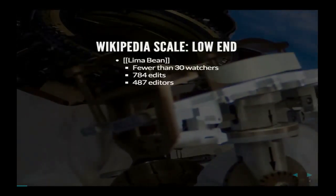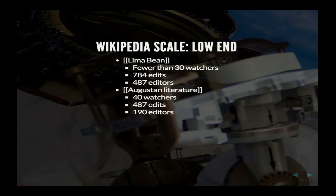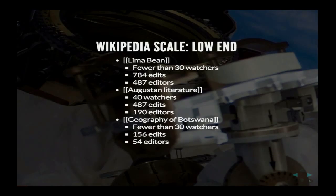On the other end of the scale on Wikipedia, you've got pages like Lima Bean. Wikipedia doesn't tell you if it has less than 30 watchers how many there are, so this might be one watcher — maybe 29 people that hate lima beans. Other pages like Augustine Literature or the Geography of Botswana are similar: 156 edits and 54 editors over 14 years, with most activity probably happening long ago.